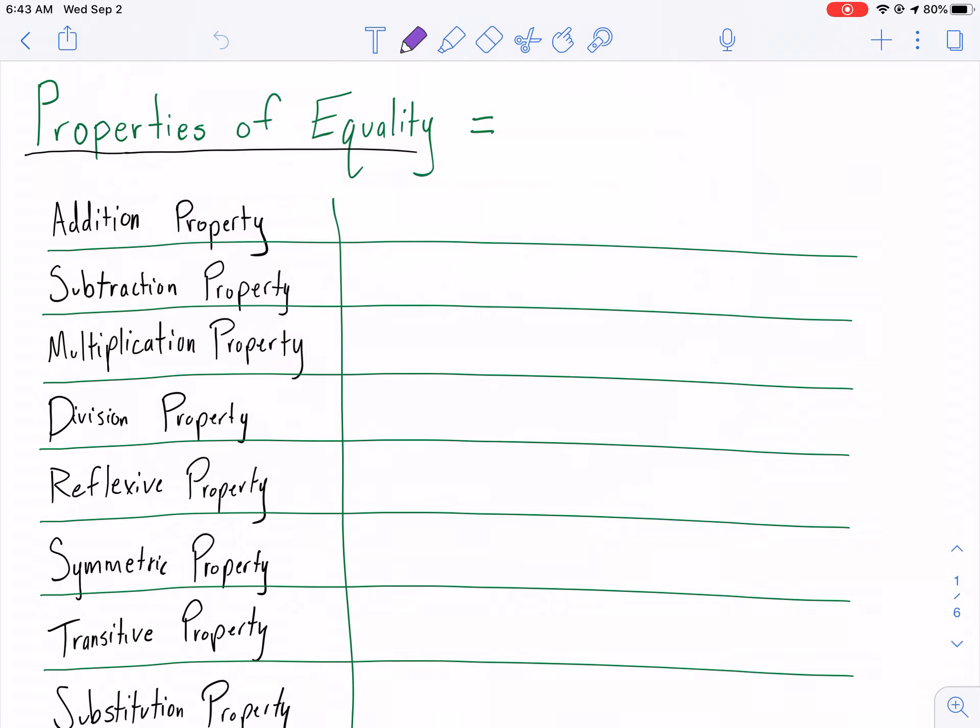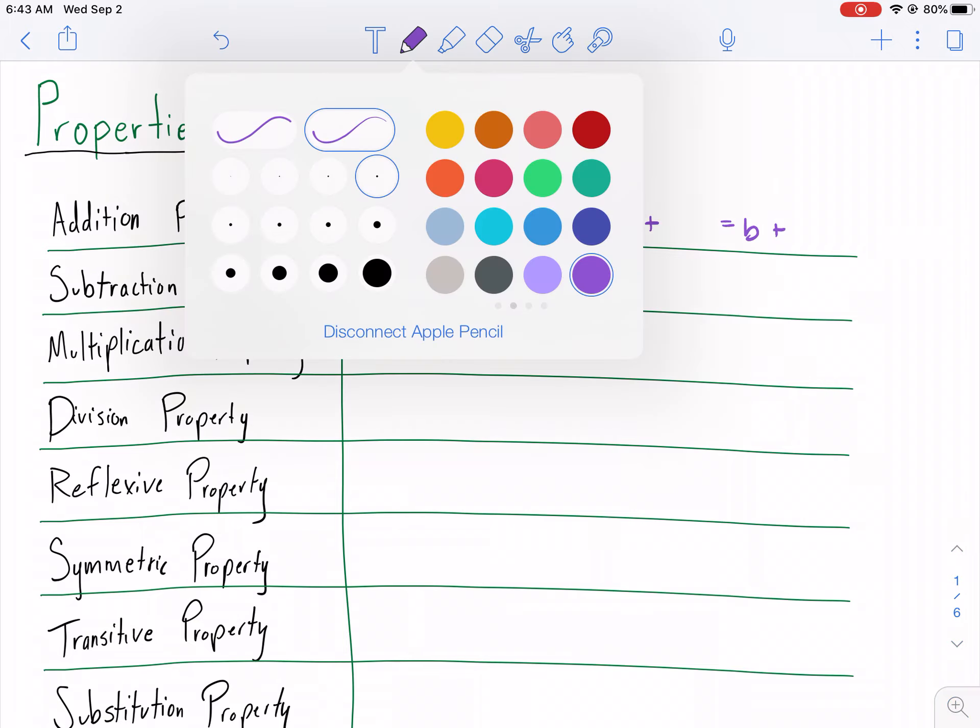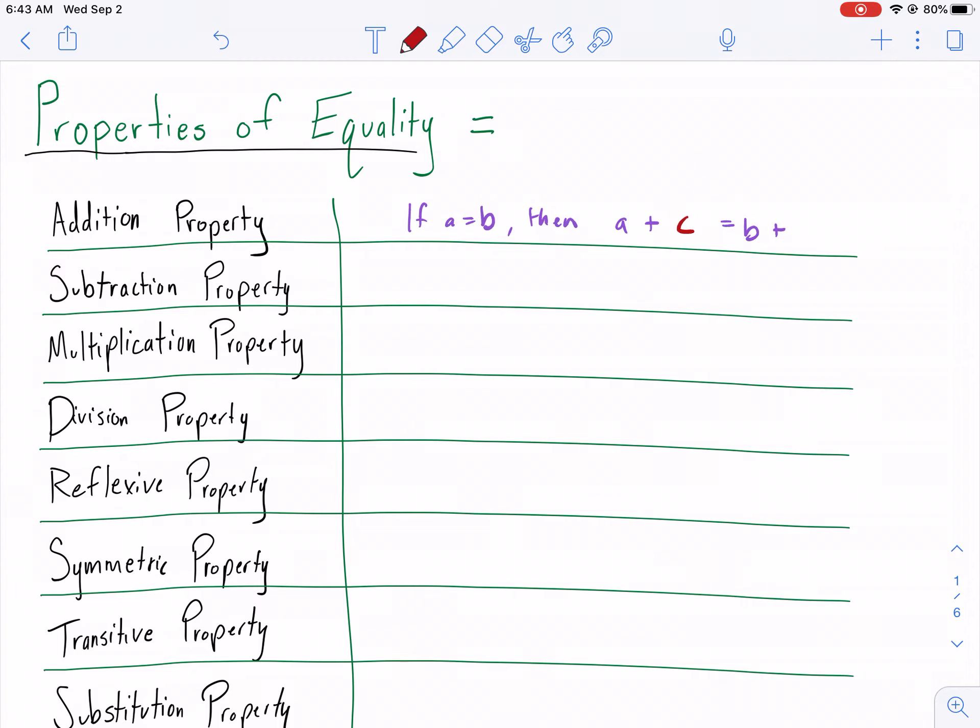Let's choose purple for this one. Addition property. So these are things that you have done all the time. You just maybe not have known the name of the move, as I like to call it, but the property. So let's give some examples. If A equals B, then A plus blank equals B plus blank. And we can say A plus C equals B plus C.